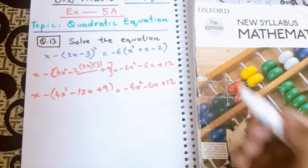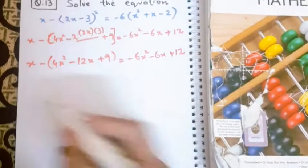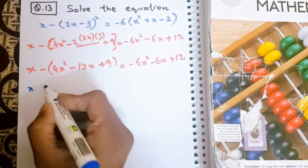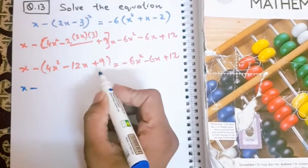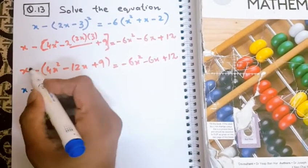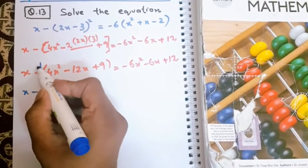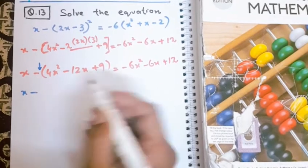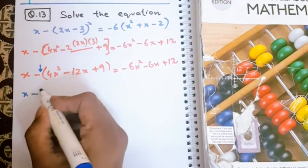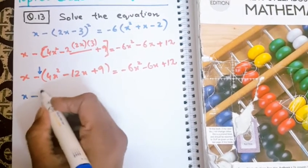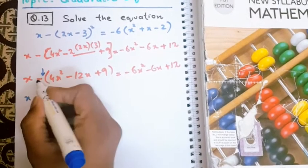As it is. Now I will open the bracket. x will not multiply with anything inside the bracket because it is not just next to the bracket. So everything inside the bracket is going to remain the same: 4x². Because of the minus sign, this minus turns into positive.